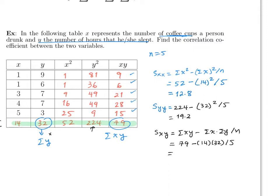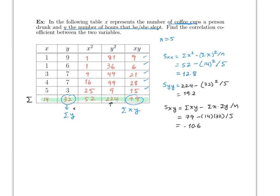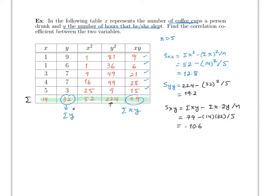S_xy can be positive or negative. You can tell right away it will be negative here because as x increases y is decreasing, so the scatter plot goes downward.